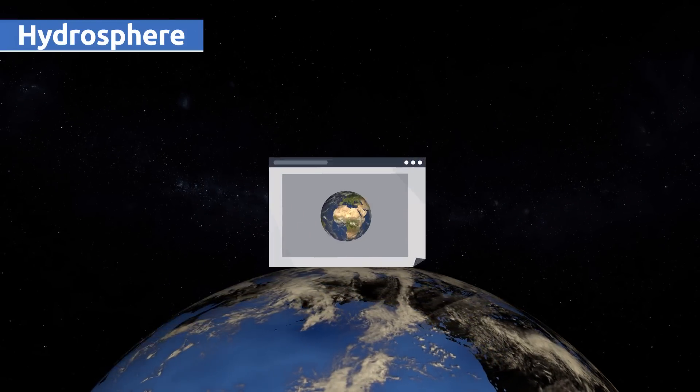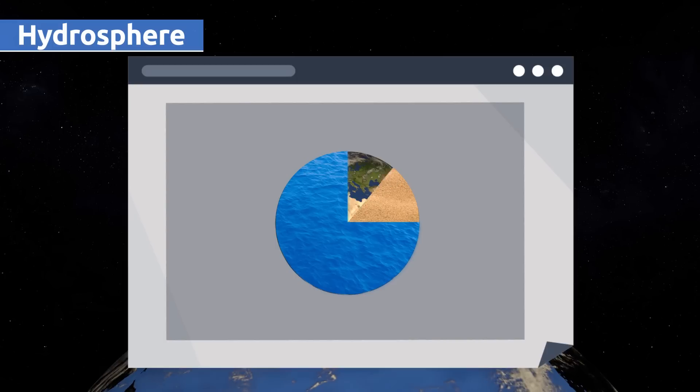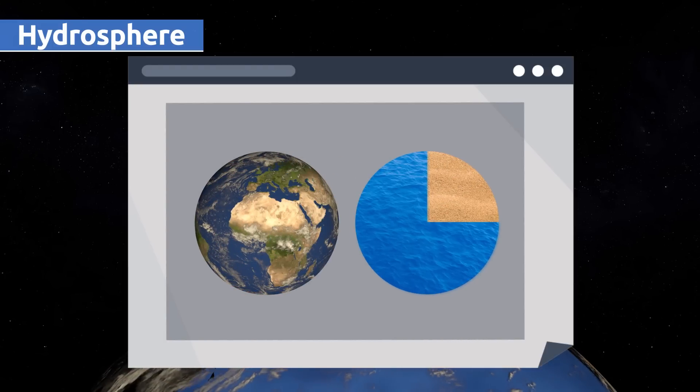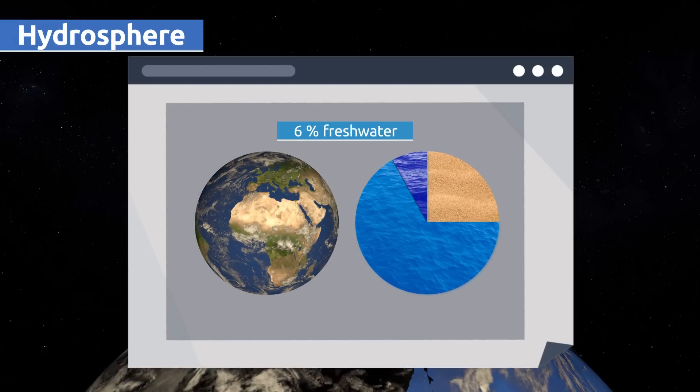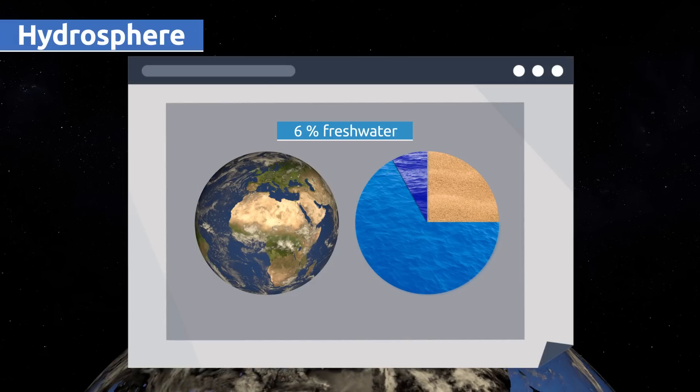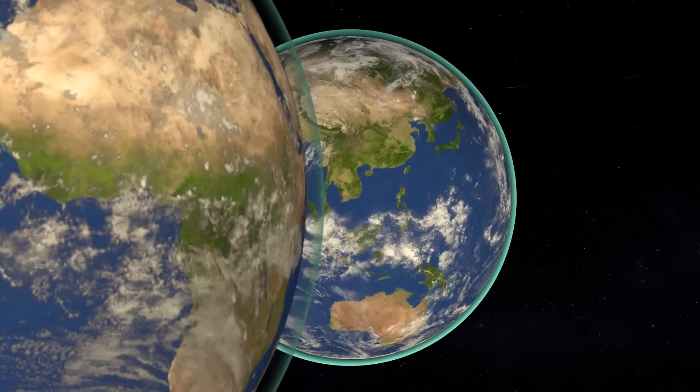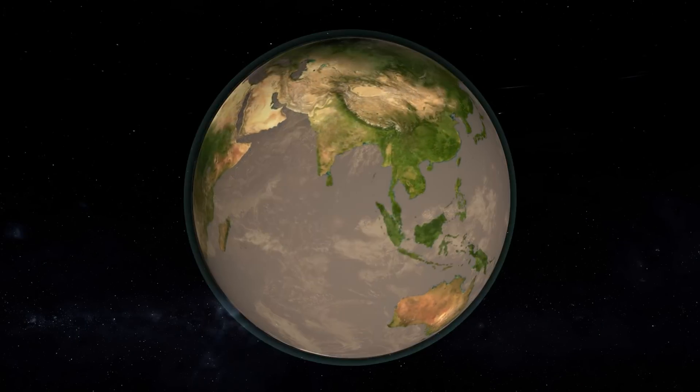The hydrosphere covers three-quarters of our planet. That's a huge amount of water, but only six percent is fresh drinking water. That's why we should save as much water as we can and use it wisely.